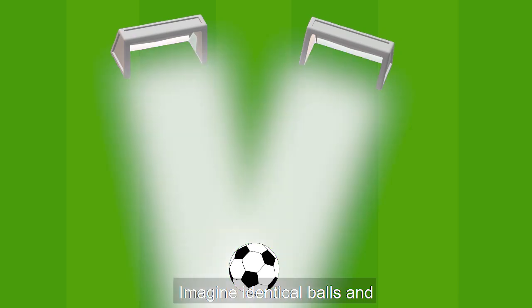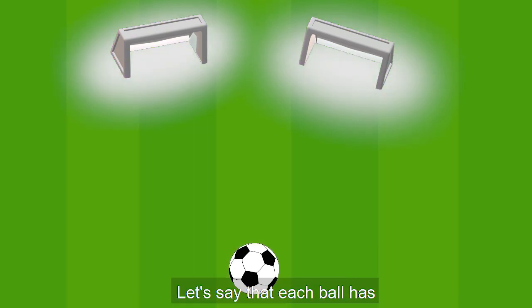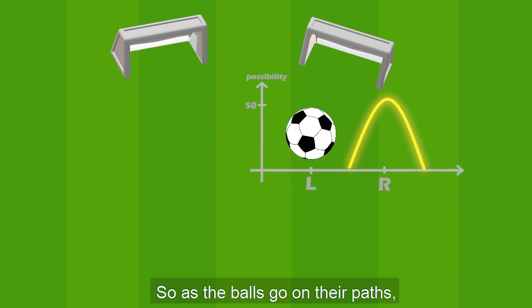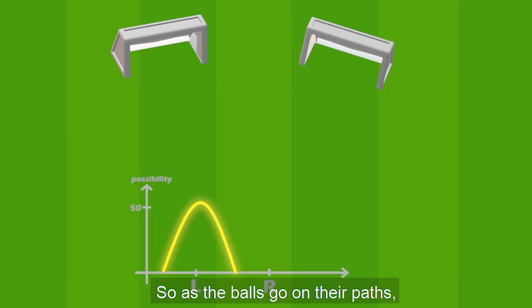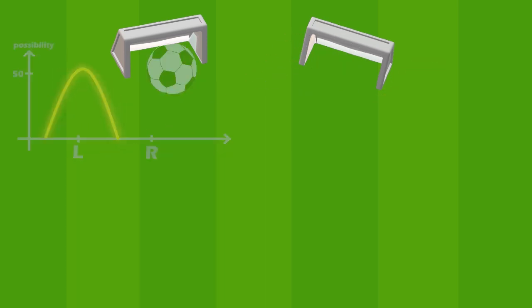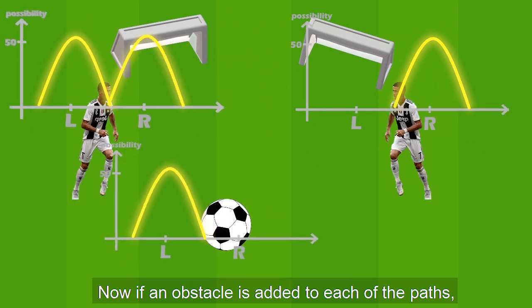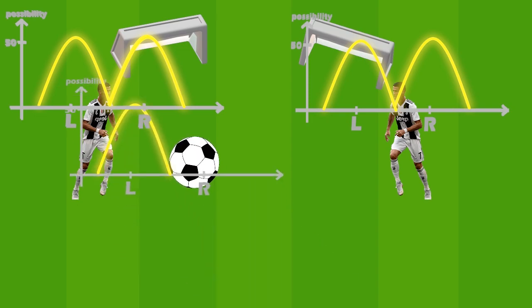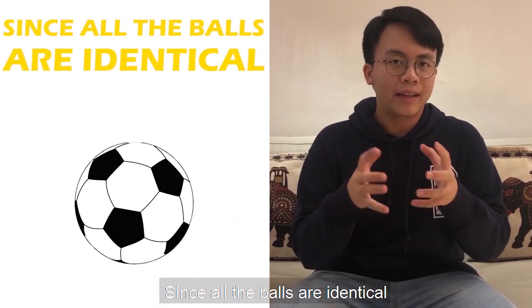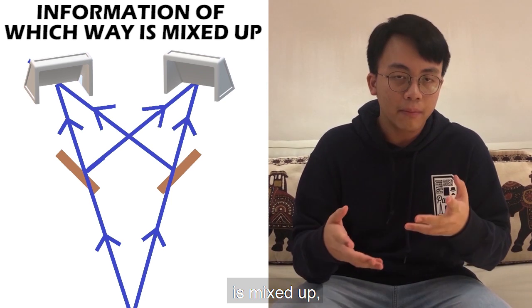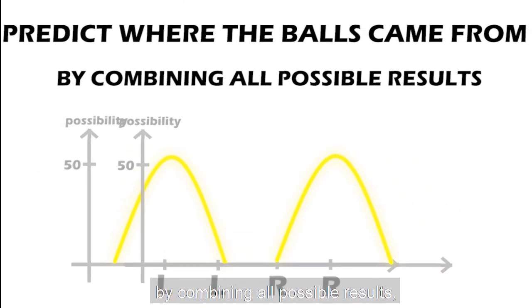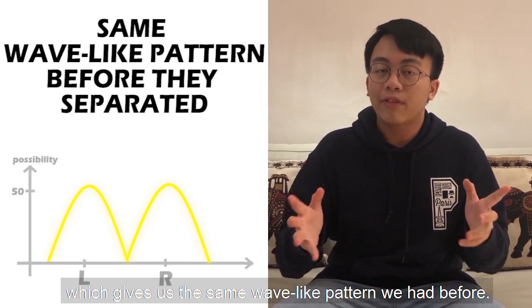Imagine identical balls and two paths leading to two holes. Each ball has a 50% possibility of going through the left path or the right path. So as the balls go on their paths, the possibilities separate. Now if an obstacle is added to each of the paths, some of the balls will be kicked to the other hole. Since all the balls are identical and the information of which way they came from is mixed up, we can only rethink where the balls came from by combining all possible results, which gives us the same pattern we had before.